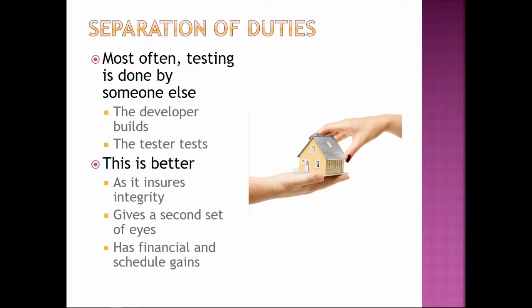Our brain is very accustomed to what it's expecting to see — the stuff of our history and how we've been thinking about the software. Somebody else comes in and they can see it an entirely different way. So it gives us a certain integrity — it also ensures that if somebody was tempted to cut corners, they won't. And it gives us that second viewpoint.